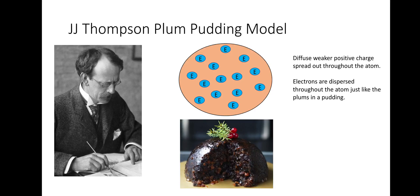So first of all, J.J. Thompson had the Plum Pudding Model, and Thompson postulated there was a diffuse weaker positive charge spread throughout the atom, in this instance depicted by the orange type colour, and that the electrons were simply dispersed throughout the atom, just like the plums in a pudding, as denoted in the diagram. If you have to pause or make any notes, please remember to pause the video.